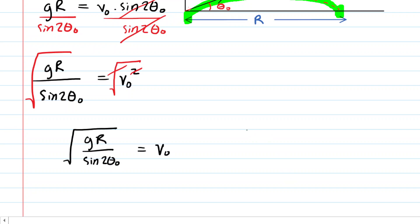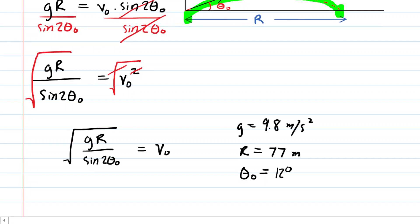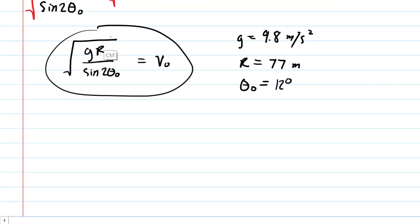And now at this stage we just want to lay out the known information. We know g is the acceleration due to gravity which has this value here. The horizontal range in the question was given as 77 meters and then the launch angle theta-naught was 12 degrees. So let's go ahead and plug all of that known information into this equation right here.